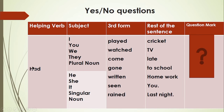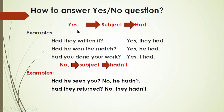For making yes/no questions, we bring 'had' to the start of the sentence, followed by the subject, then the third form, then the rest of the sentence, and a question mark. For example: 'Had you played cricket?' 'Had you watched TV?' 'Had they come late?' 'Had he written homework?' 'Had she seen you?' To answer positively: 'Yes, subject + had' — e.g., 'Had they written it? Yes, they had.' 'Had he won the match? Yes, he had.' For a negative answer: 'No, subject + hadn't' — e.g., 'Had he seen you? No, he hadn't.' 'Had they returned? No, they hadn't.'